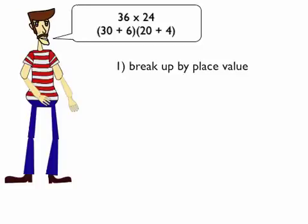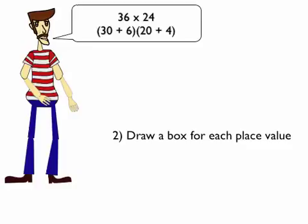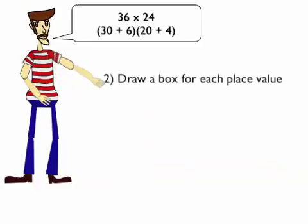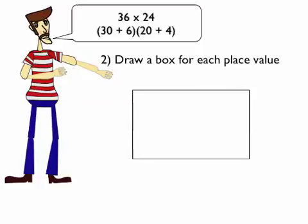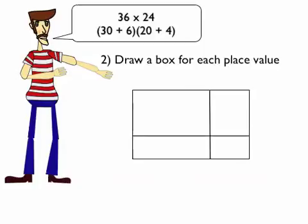Now, draw a box for each place value. That line should not be in the middle, because thirty is bigger than six, and then twenty is bigger than four, so it needs more room!